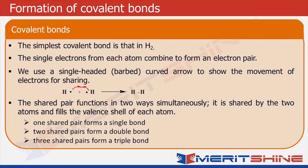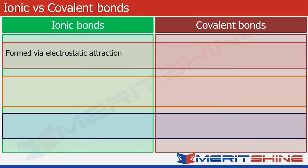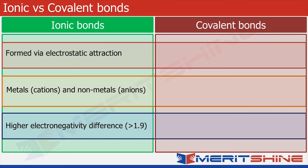This will be very useful in understanding organic chemistry. A quick recap: ionic bonds are formed via electrostatic attraction and are generally formed between a metal and a non-metal, where the metal becomes the cation and the non-metal becomes the anion. The major cause is an electronegativity difference greater than 1.9. Covalent bonds are formed by sharing of electrons between atoms having similar electronegativity and are generally seen in non-metals.